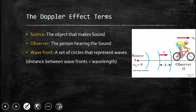One is the source. Source is the object that makes sound. And if it is the Doppler effect in light, then the source of light. The second is observer. Observer is the person who is hearing the sound.